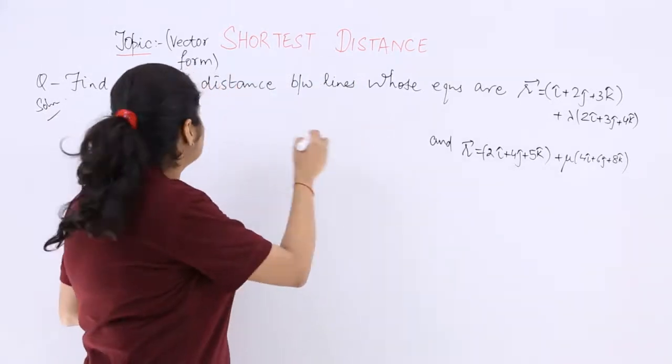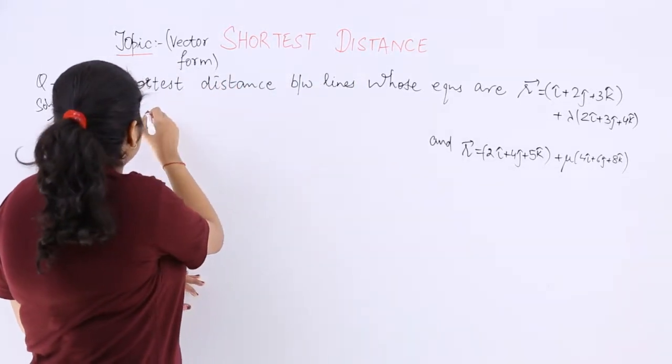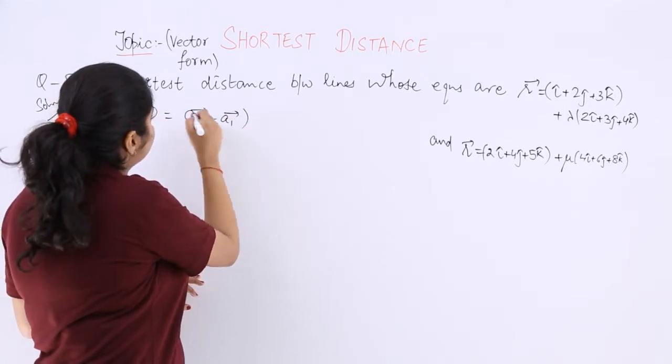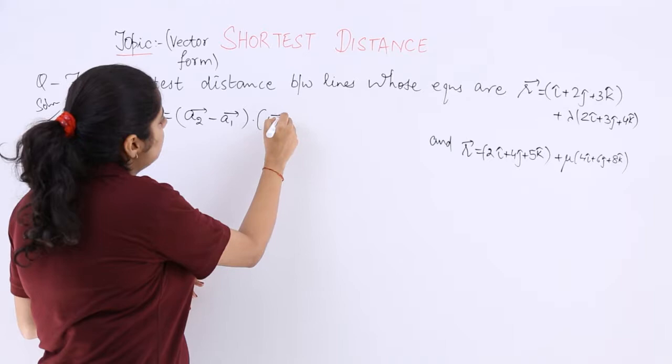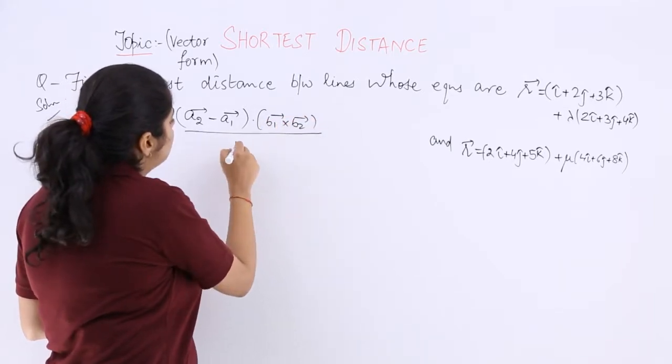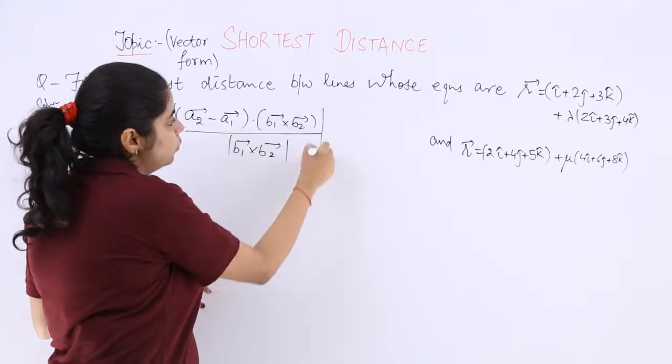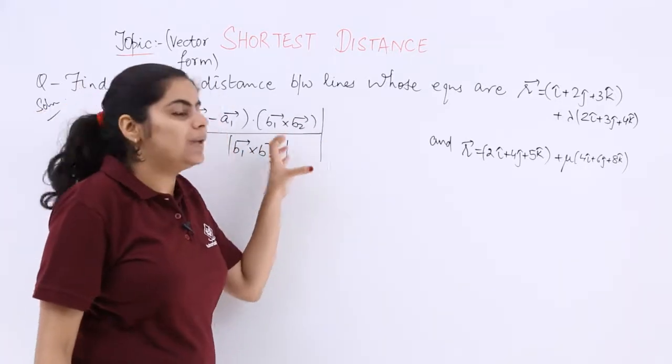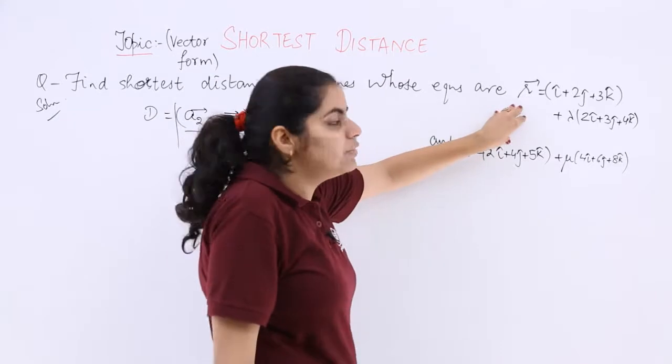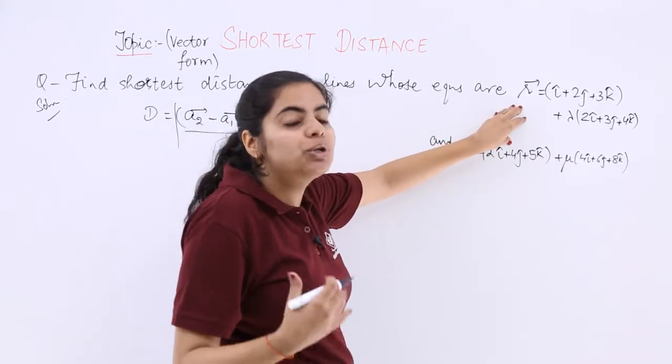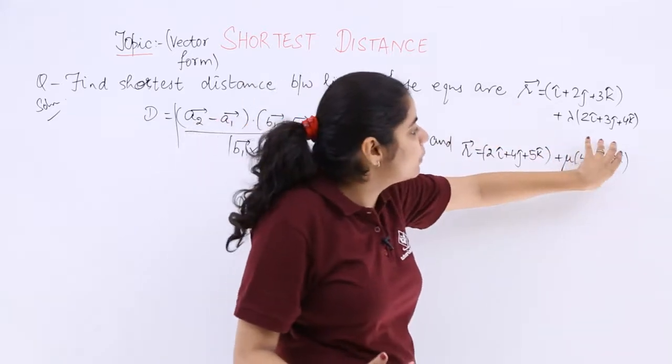I know that the shortest distance D is equal to (a2-a1) dot (b1 cross b2) upon mod of (b1 cross b2). But before applying this formula, you have to observe these equations again and if something common can be taken out, you have to take it common, especially from the second part.